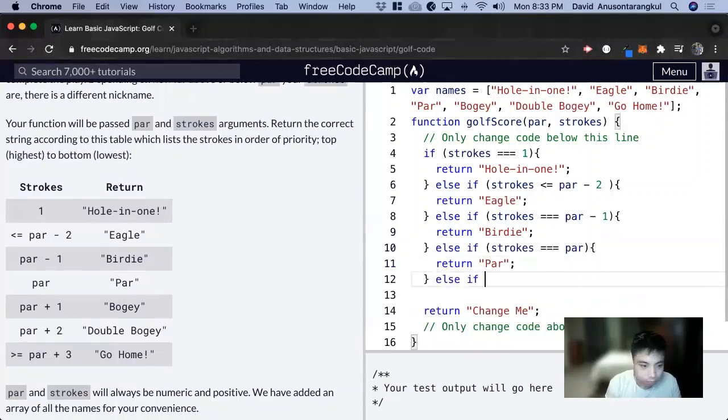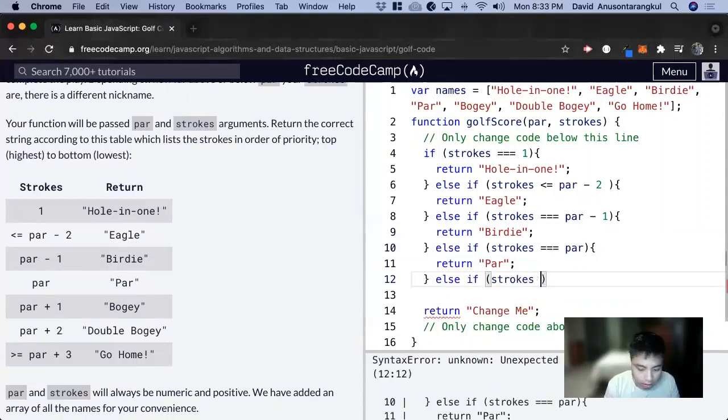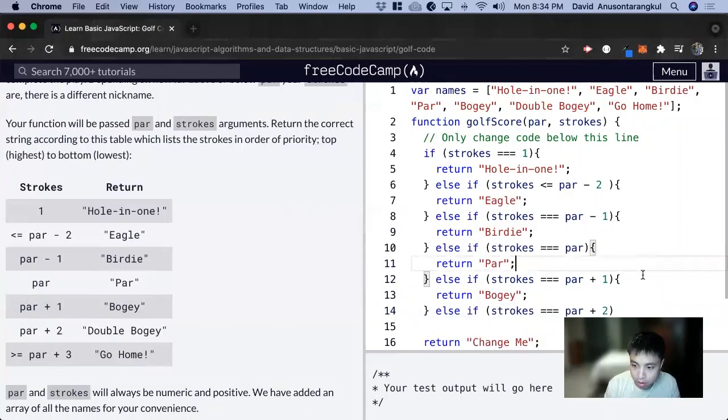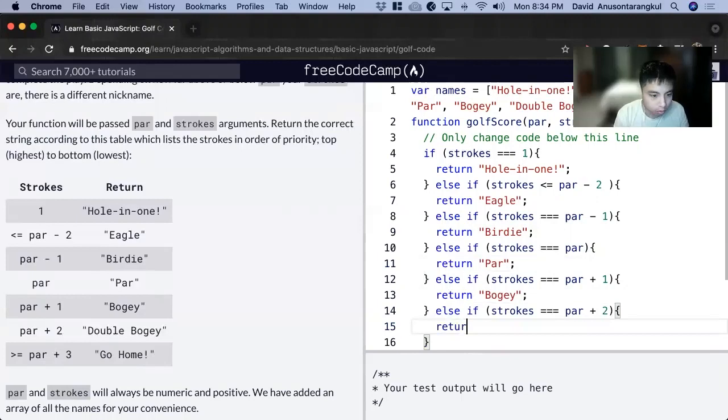Else if strokes is equal to par plus one, we return Bogey. Else if strokes is equal to par plus two, return Double Bogey.